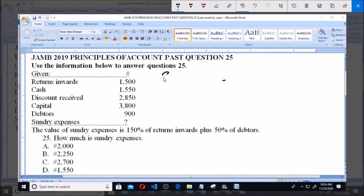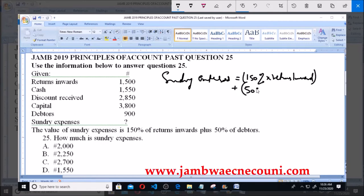So our sundry expenses would be 150% of returns inward plus 50% of debtors.